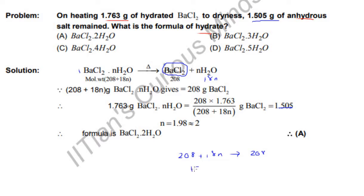And 1.763 produces 1.505 anhydrous salt. It is hydrated salt to anhydrous salt, both barium chloride. So yes, ratio.